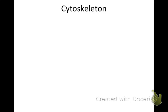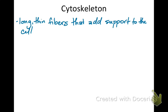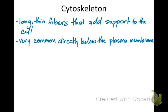The cytoskeleton fills many roles. It is long and thin, made of protein fibers, and so it is generally strong. You find it all over the cell, but a lot of it is concentrated directly under the plasma membrane. It supports the membrane, just like our skeleton supports us, but it can do a lot more.